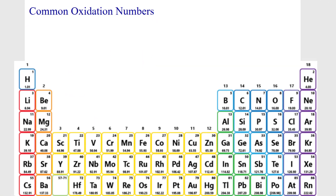Oxidation numbers is a fancy phrase which means charge — the typical charge on an element when it becomes an ion. You can see the alkali metals here: lithium, sodium, potassium, rubidium, cesium. They all have one valence electron, so they will tend to become positive one oxidation number, because that one electron is on the outside of the noble gas configuration, outside its principal quantum energy level, so it's the least attracted and will have the lowest ionization energy.